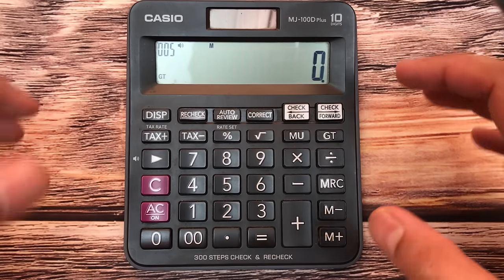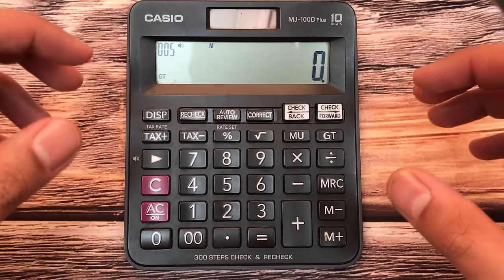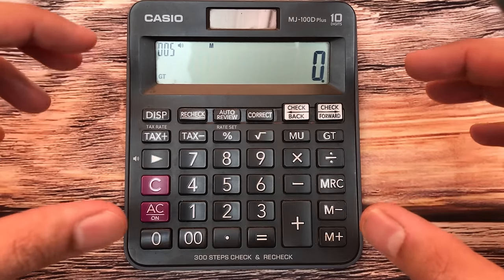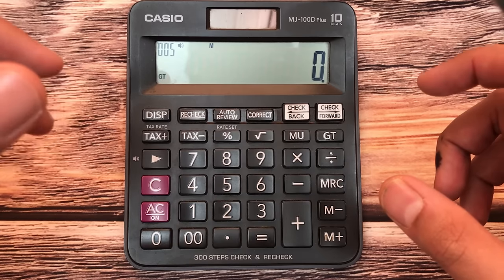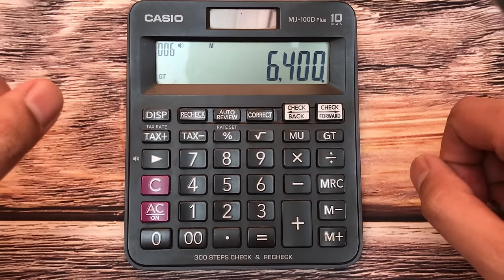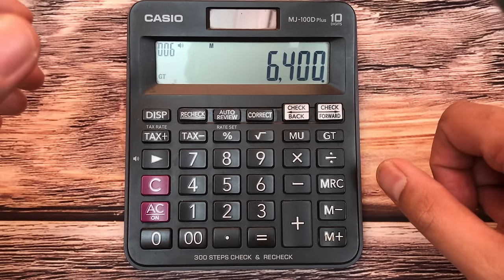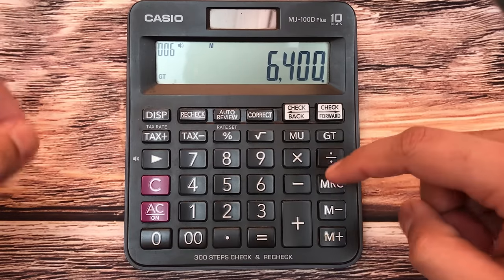Hello guys, I hope you are doing really well. In today's video, I am going to show you how to calculate 10% discount on your calculator. For example, you have an item and the price of that item is 6400, and you want to find out what will be the final price after 10% discount.